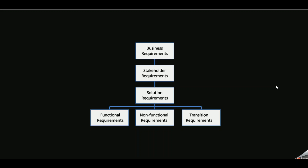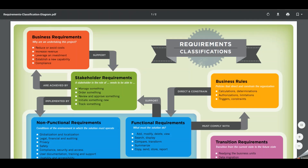As you can see from the top, we start off with business requirements at the high level, and then as we go down toward the bottom, functional, non-functional, and transition requirements become very specific. We normally start with business requirements, then move into stakeholder, solution, and then transition requirements. Now let's take a look at the diagram.